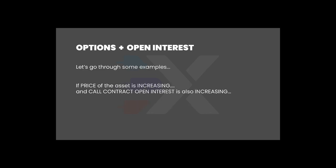Let's go through some examples. If the price of an asset is increasing and call contract open interest is also increasing, that seems to reason that we can assume people are bullish — people are looking to buy, people think it's going to go up, and so the open interest is going up. This is a relatively straightforward example, but we're going to get into some more complicated ones to show how this can differ.